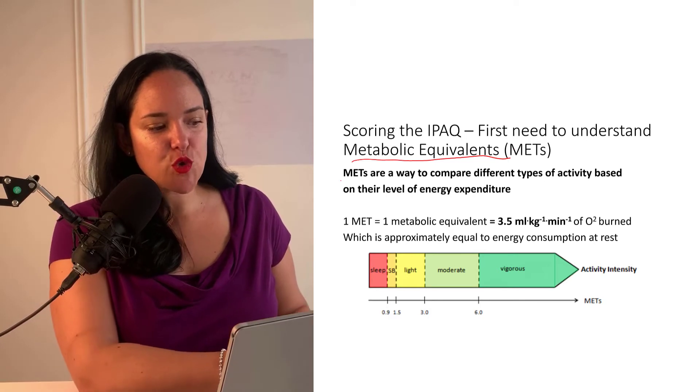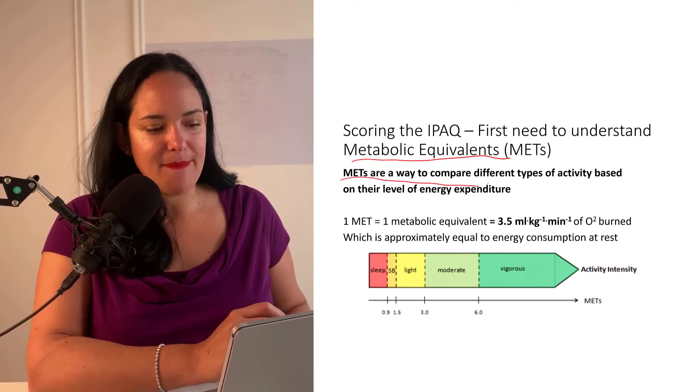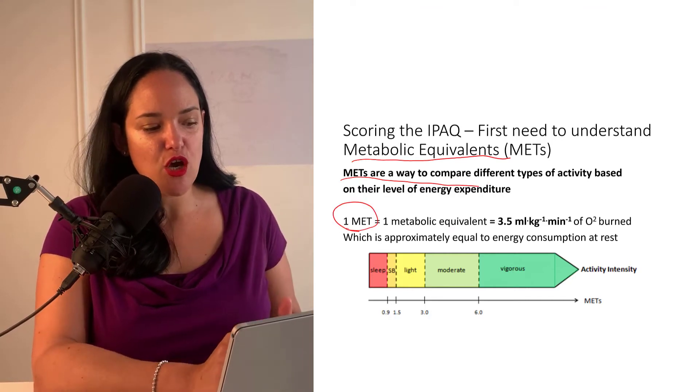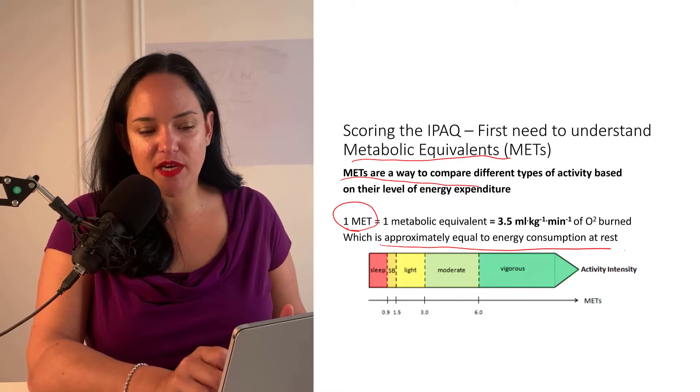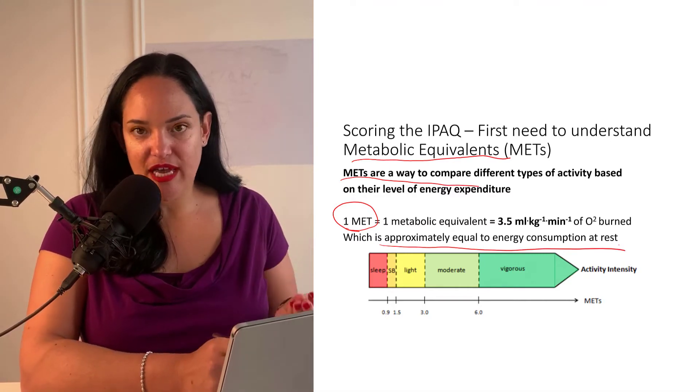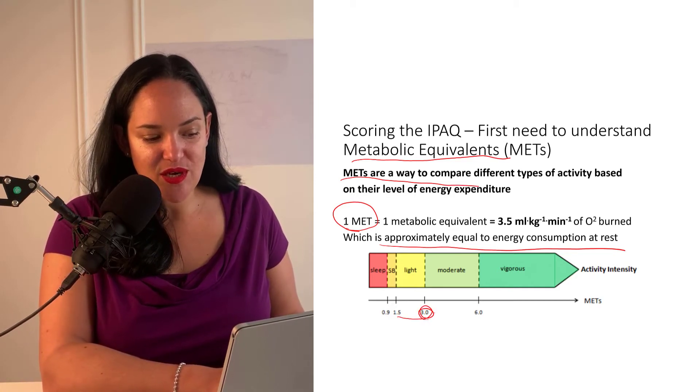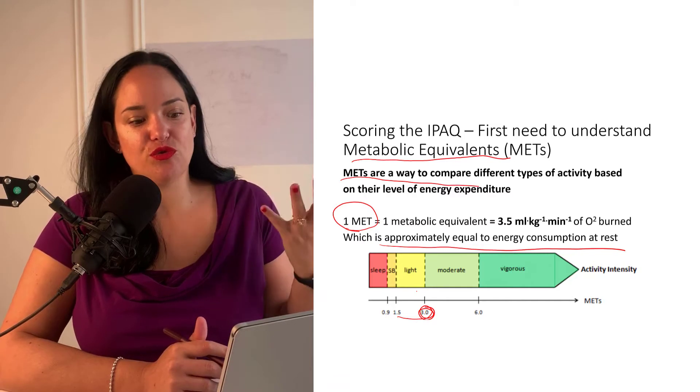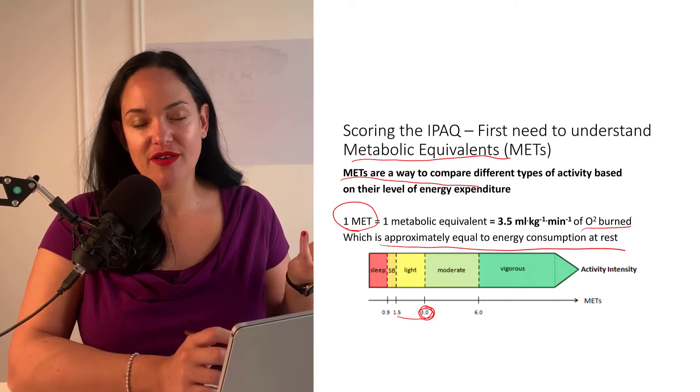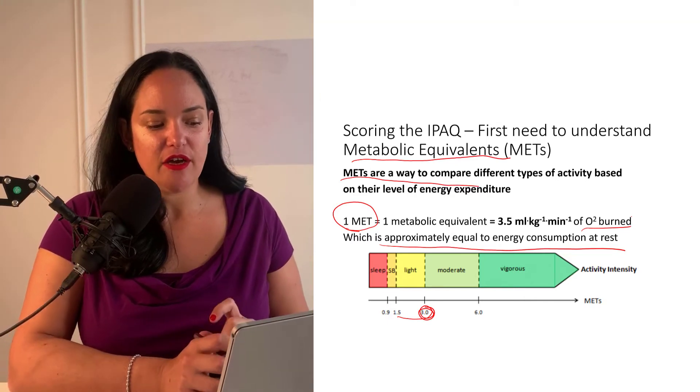METs are a great way of comparing different types of activities by comparing basically that activity to energy expenditure at rest. So one MET is equal to energy expenditure at rest. So like three METs would mean that that particular activity is three times the oxygen burned compared to when someone is at rest. So it's a higher intensity activity.